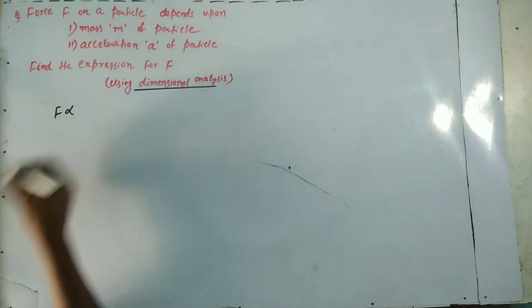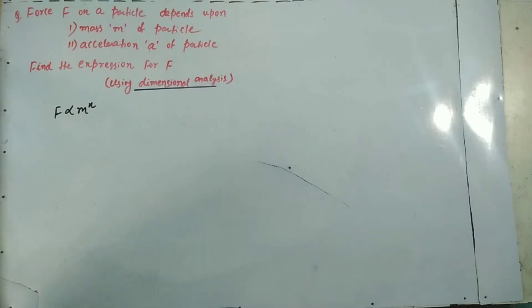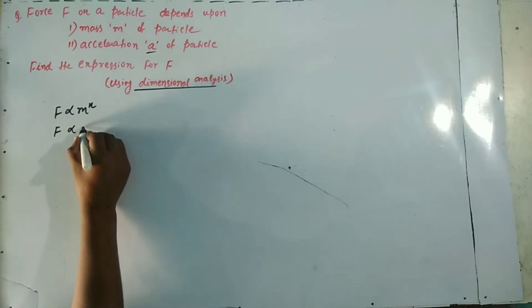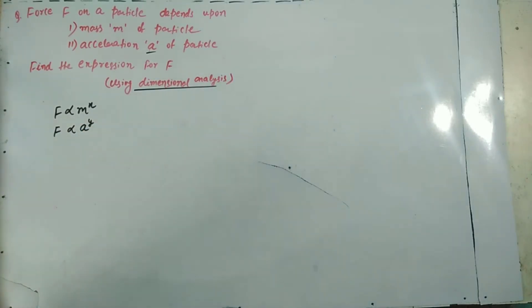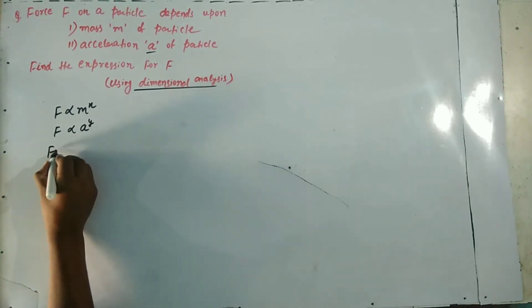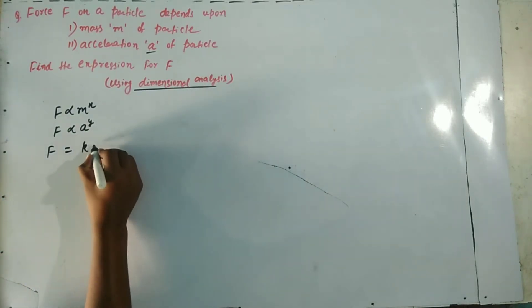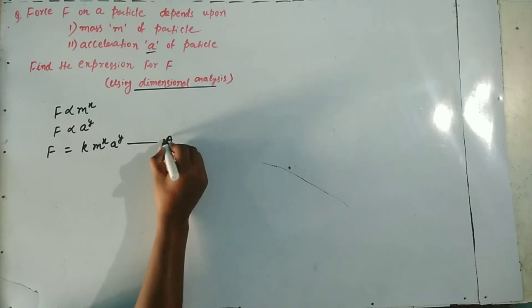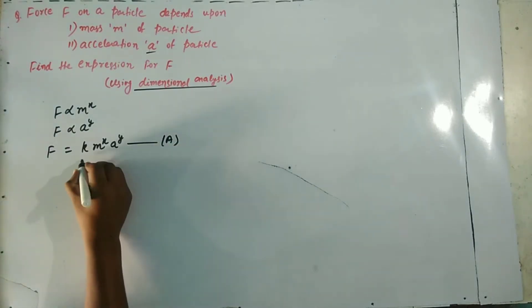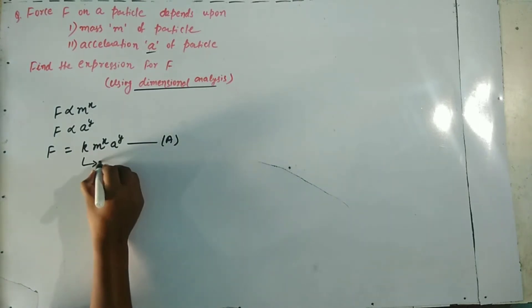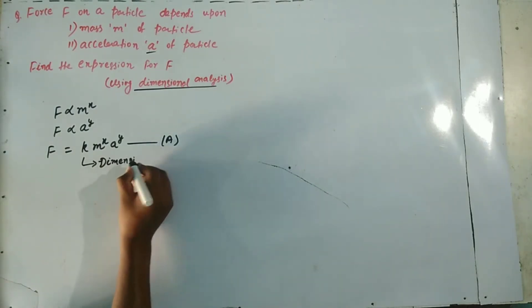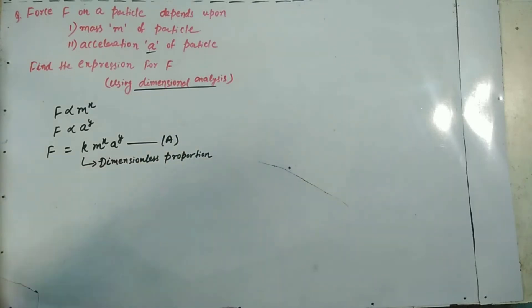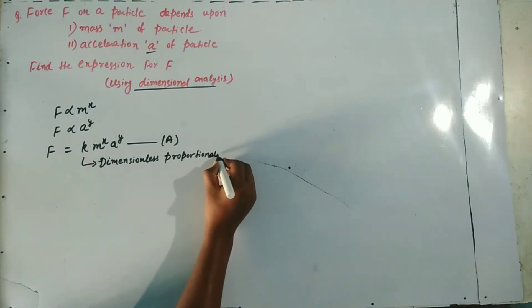The force F depends on mass M, so F is proportional to M to the power X. F is also proportional to A to the power Y because force also depends on acceleration. When we remove the proportionality, F equals K times M to the power X times A to the power Y. Call this equation A, where K is a dimensionless proportionality constant.